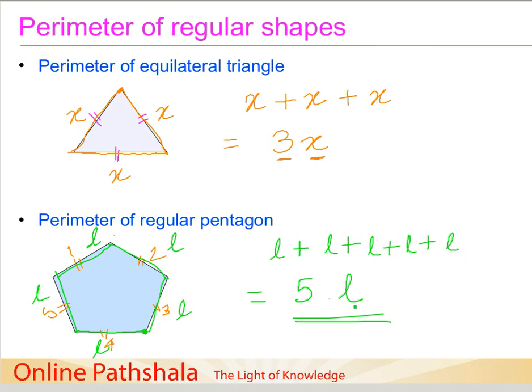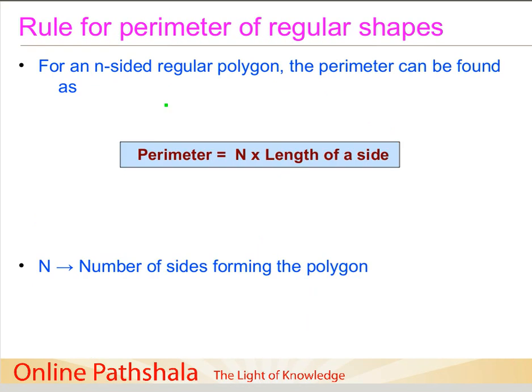Now you should have started seeing a pattern emerging in terms of trying to find out the perimeter of regular shapes. If you take the example of square, we have 4 sides, the perimeter is 4 times its length. For equilateral triangle, we have the length as x and the perimeter is 3 times the length, whereas in case of perimeter of regular pentagon, we have 5 times its length. Similarly, the same rule can be applied to hexagon or any other regular shape. We can generalize this rule for finding perimeter.